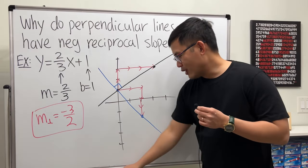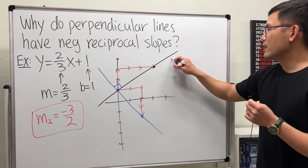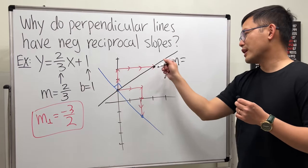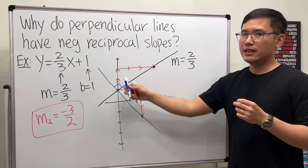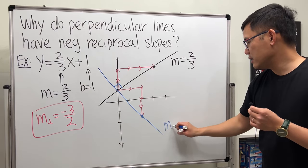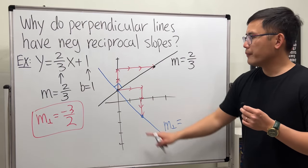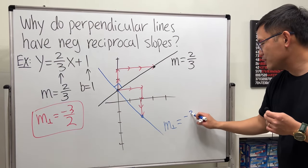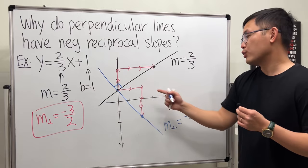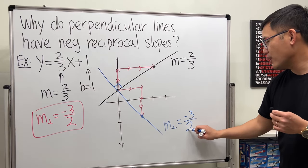And the slope for this line in black, it was equal to up 2, to the right 3, right? So 2 over 3. And the slope for this line in blue is the perpendicular slope. We actually went down 3 times. So the slope is negative 3, and then we move to the right 2 times. So negative 3 over 2.